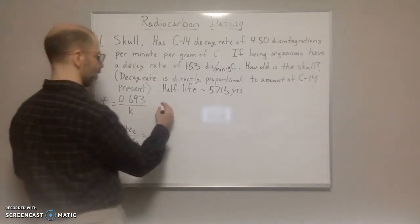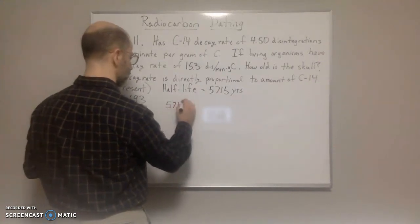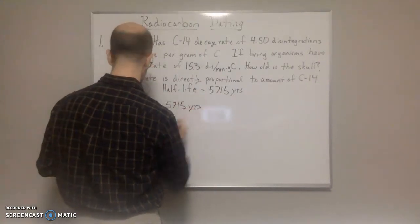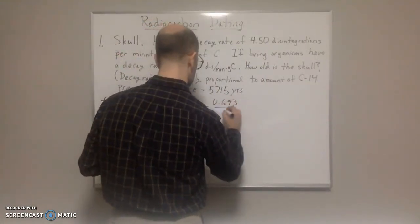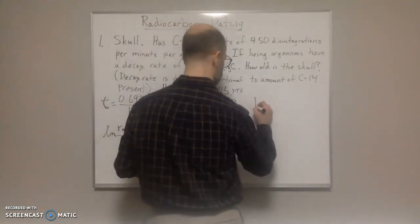So let's go ahead and get into this. The half-life is 5,715 years. That's going to be equal to 0.693 over k.